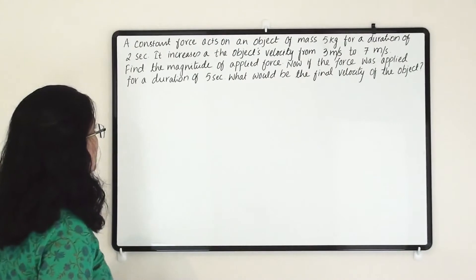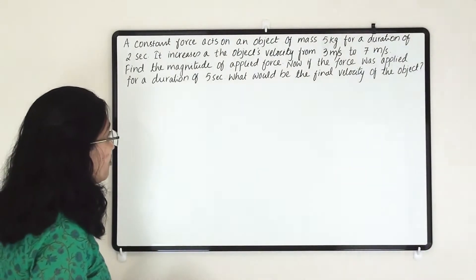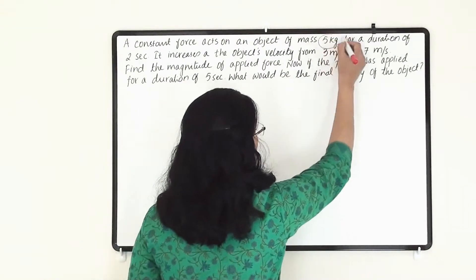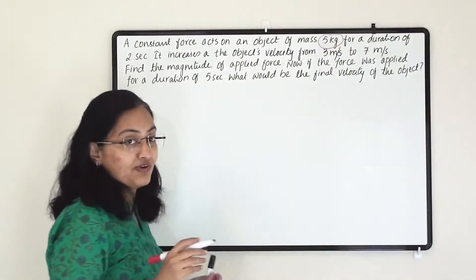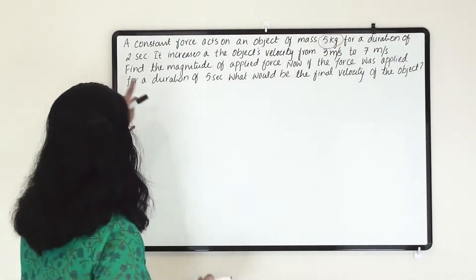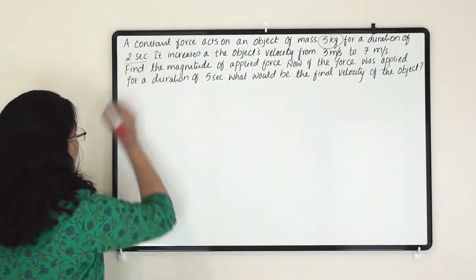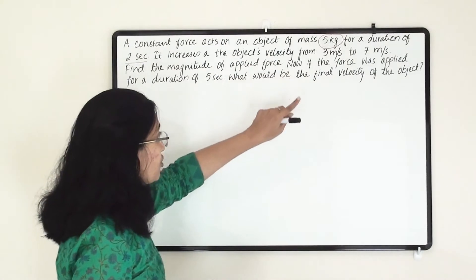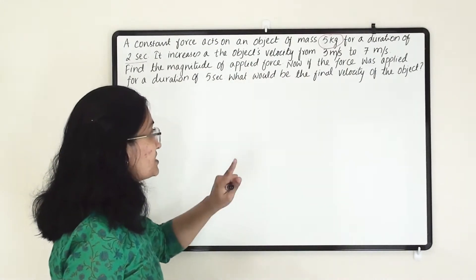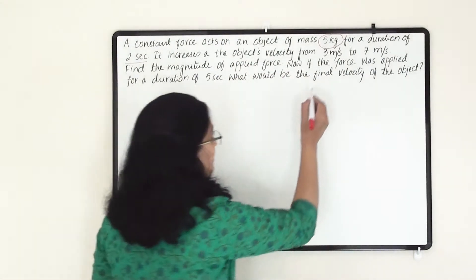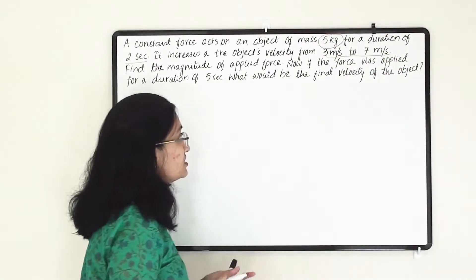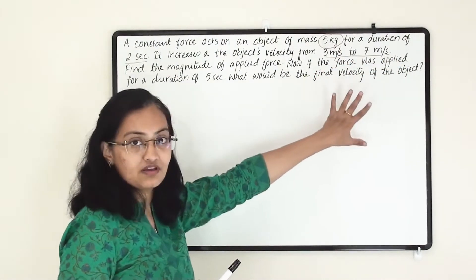A constant force acts on an object of mass 5 kg for a duration of 2 seconds. It increases the object's velocity from 3 meter per second to 7 meter per second. So this is a change in velocity from 3 meter per second to 7 meter per second.